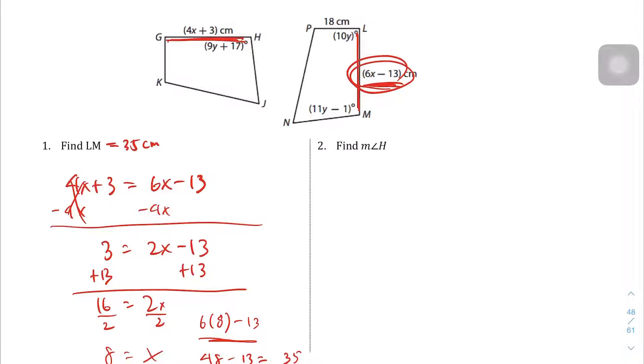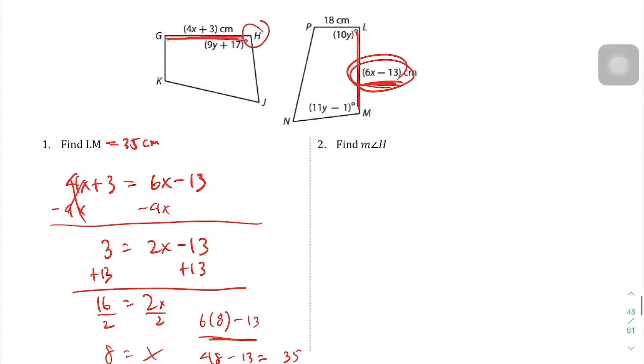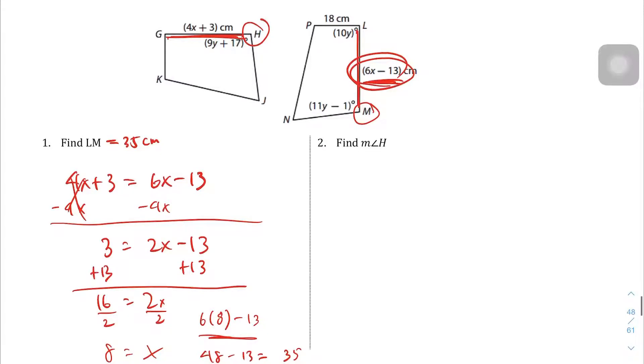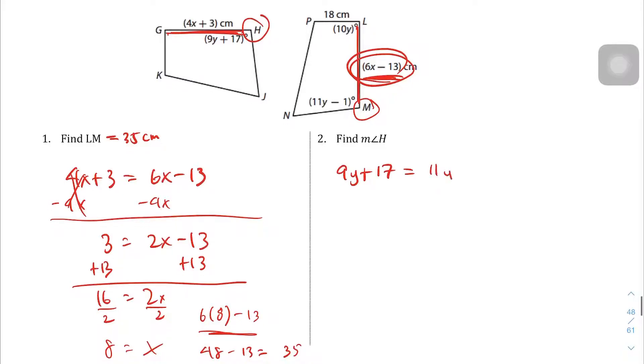Question 2, find the measure of angle H. In this case, angle H is right here. It's going to be corresponding to angle M. Since they are congruent and we're given some kind of measurement for each one, angle H we're told is 9y plus 17, and it's congruent to the other one, which is 11y minus 1. If we solve for y, we'll be able to find angle H.